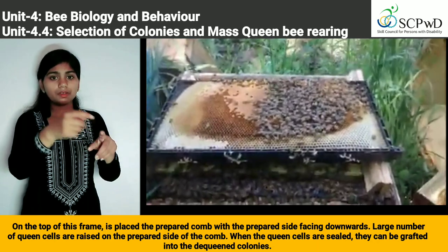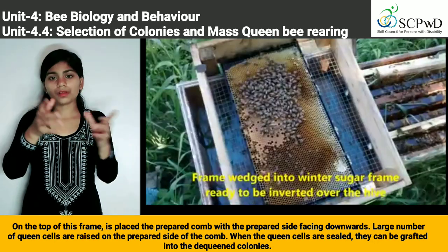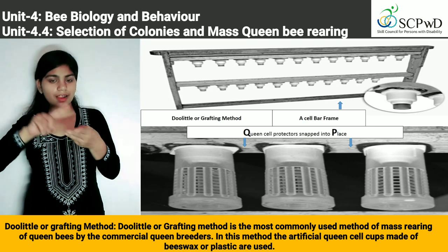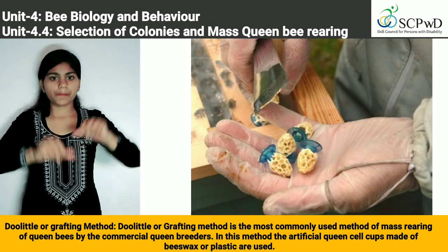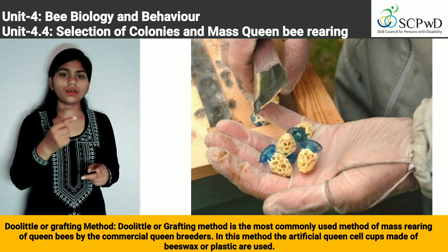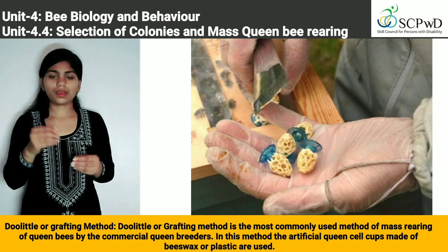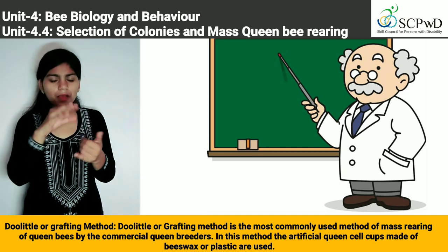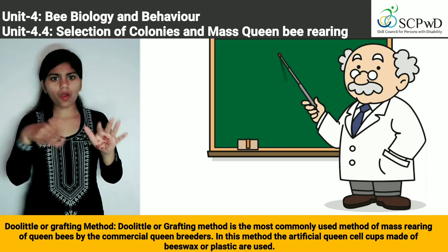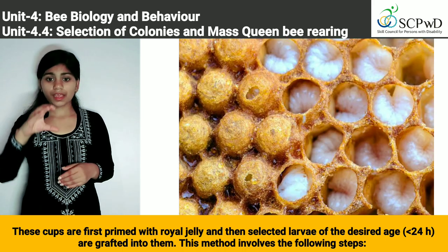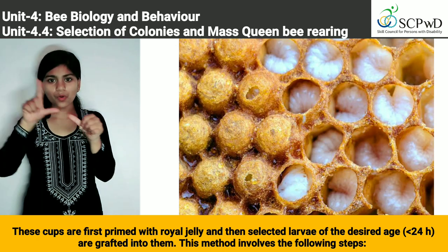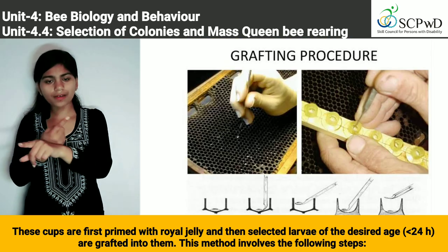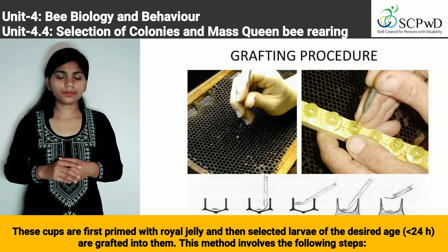Method 5: Do-little or grafting method. This is the most commonly used method of mass rearing of queen bees by commercial queen breeders. In this method, artificial queen cell cups made of beeswax or plastic are used. These cups are first primed with royal jelly, and then selected larvae of less than 24 hours age are grafted into them.